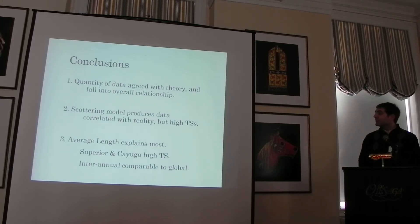In conclusions, with a large quantity of data agreed, we still found that it agreed with the theory and they tended to agree one with another and fall into a general relationship with a decent amount of correlation. The scattering model does produce data that's correlated with reality, but it has a high target strength. And the average length explained most of the variation. Cayuga and Superior have higher target strengths than the rest of the lakes, even for the size of mysids. And the inter-annual variation does not seem to be too significant, although obviously you still want to think about ground truthing your data every year.